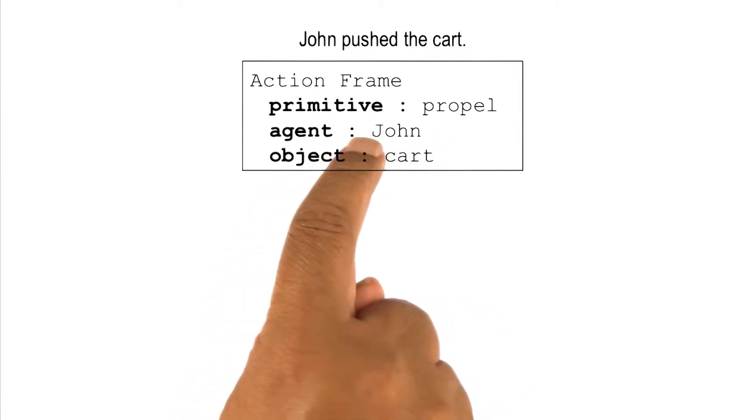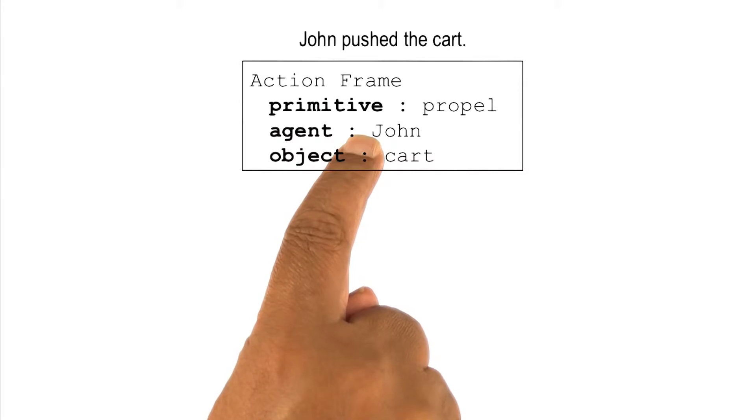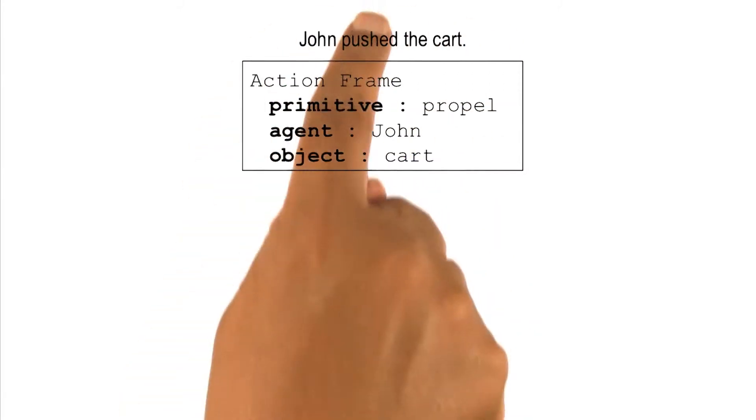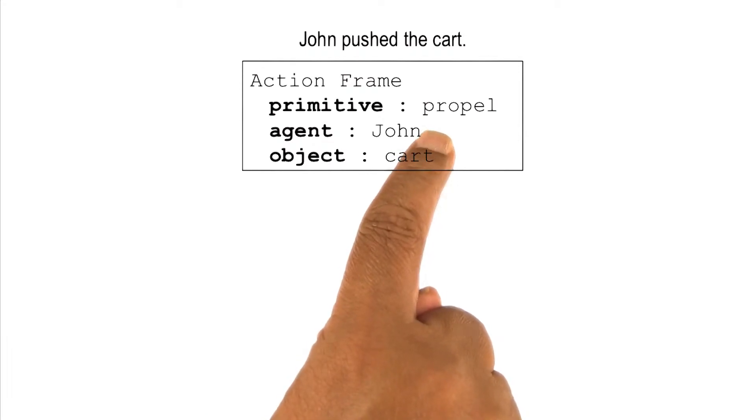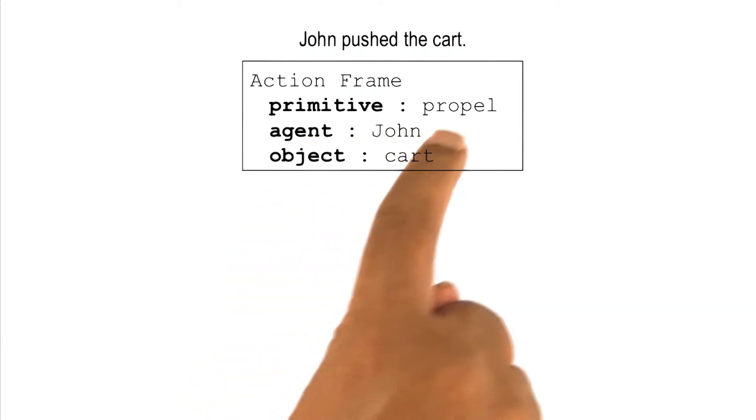Now for each of the slots, there is a rule buried in here. A rule which tells us how can we pull out from a sentence the entity that goes under the slot, the filler that must go here.